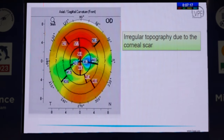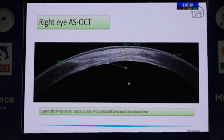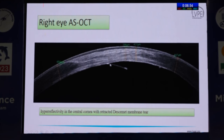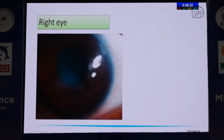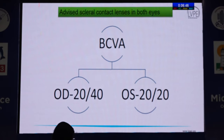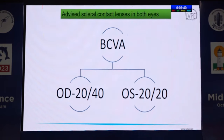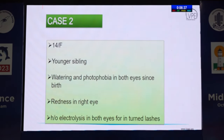Electrolysis was performed in this patient, which gave relief of symptoms, after which corneal topography was planned. In the right eye, due to the presence of scar, there was irregular topography. The left eye showed features of keratoconus with infero-superior asymmetry and thinning on the pachymetry map. The ASOCT in the right eye showed hyper-reflectivity in the center cornea with retracted Descemet membrane tear. With scleral contact lens, best corrected visual acuity improved to 20/40 in the right eye and 20/20 in the left eye.